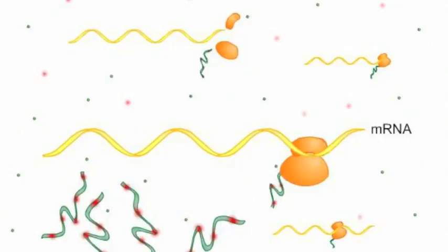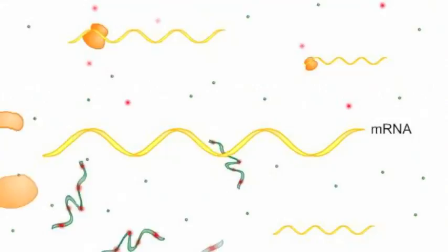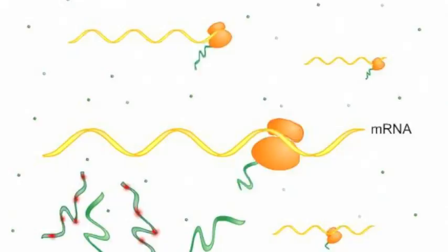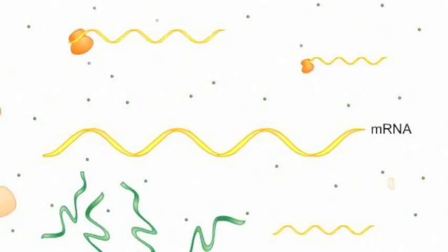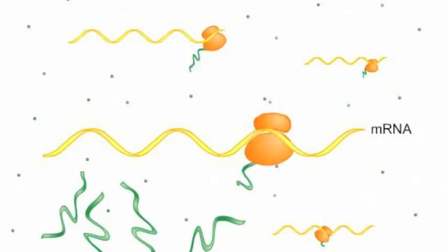The chase phase of the experiment begins when a very large amount of non-radioactive leucine is added to the sample. After the beginning of the chase, no more radioactive proteins are made. This is the basic design of a pulse chase experiment. The experiment results in a short period of production of radiolabeled molecules, which can then be tracked within the cell.